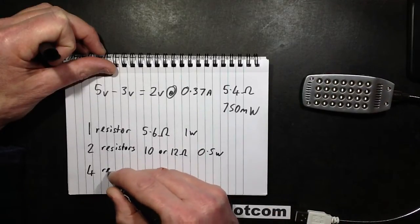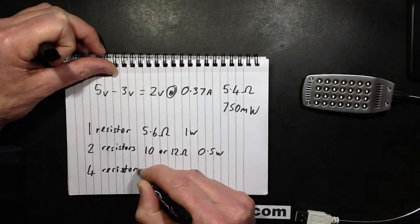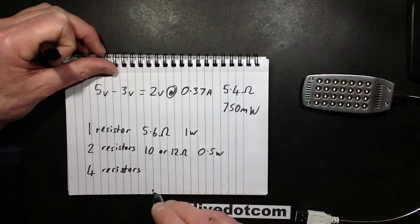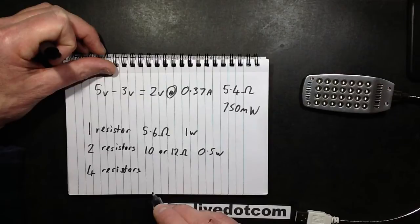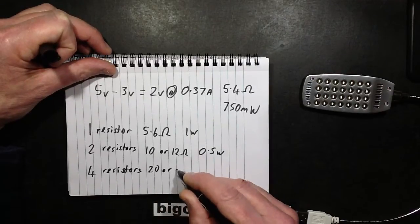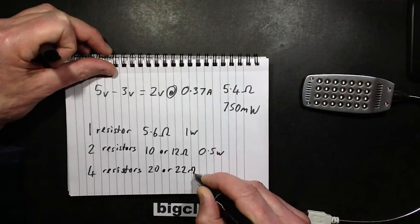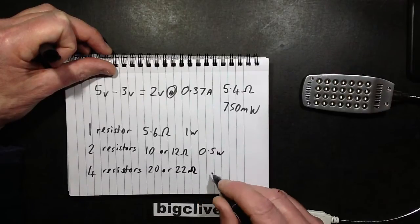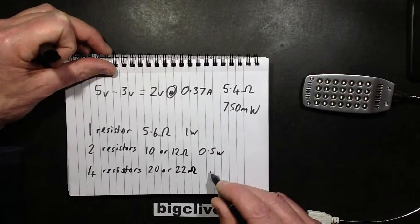If it's four resistors, the nearest values would be about 18 or 22 ohms. They might use a 20 ohm, but let's say 20 or 22 ohm. 22 ohm is one of the very standard values. And in that case you could actually use quarter watt.